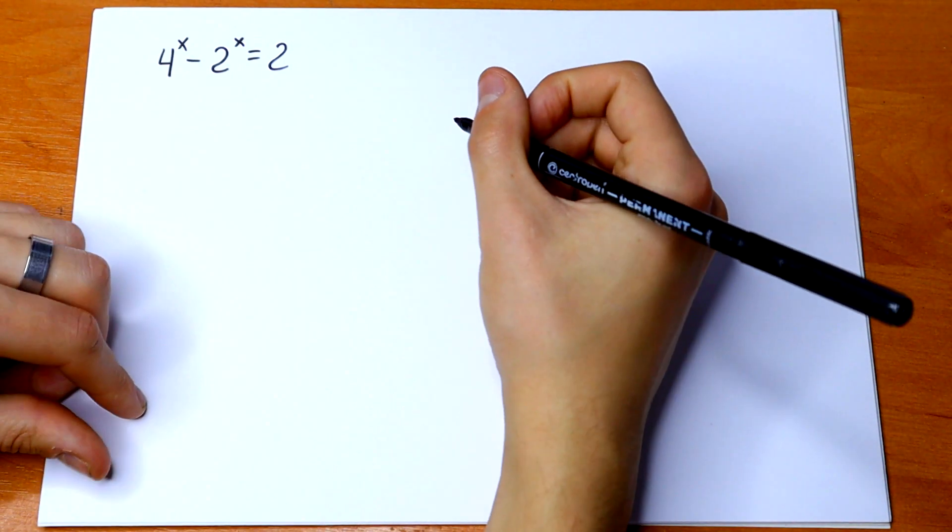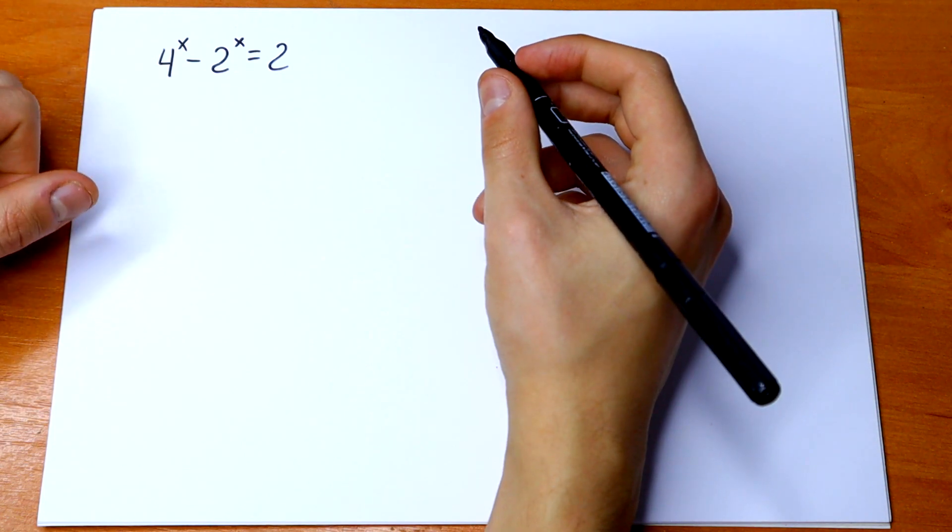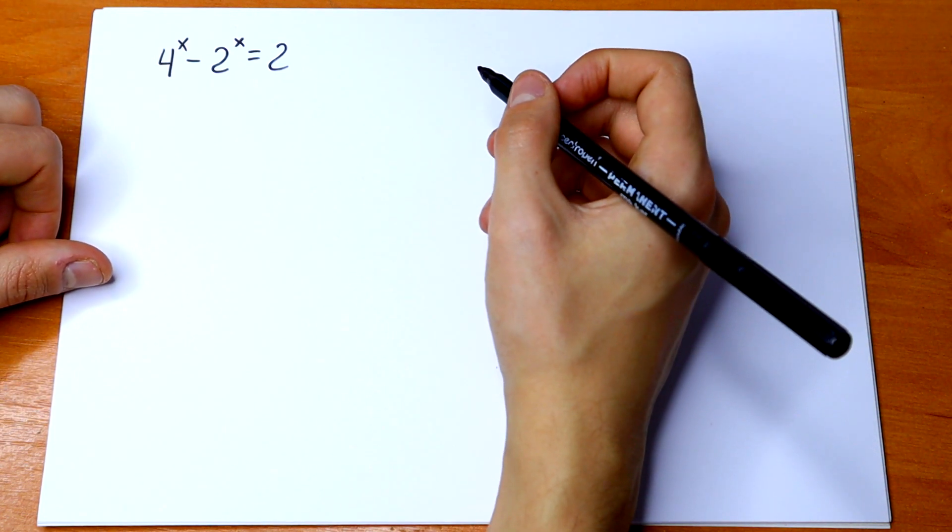Hello everyone, welcome back to MathMood. Here we have an interesting exponential equation: 4^x - 2^x = 2.